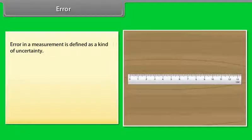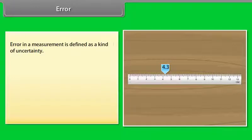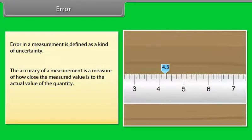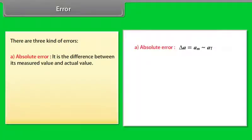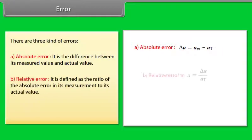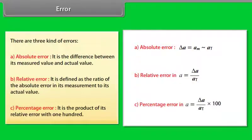Error. The result of every measurement by any measuring instrument contains some uncertainty. Error in a measurement is defined as a kind of uncertainty. The accuracy of a measurement is a measure of how close the measured value is to the actual value of the quantity. Precision tells us to what resolution or limit the quantity is measured. There are three kinds of errors: Number one, absolute error, it is the difference between its measured value and actual value. Number two, relative error, it is defined as the ratio of the absolute error in its measurement to its actual value. Number three, percentage error, it is the product of its relative error with one hundred.